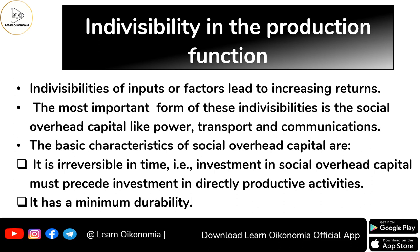The first indivisibility is indivisibility in the production function. We know that output Q is a function of different inputs — labor, capital, technology, and so on. Indivisibility of factors of production leads to increasing returns, as Rosenstein-Rodan has argued. The most important forms of these indivisibilities include power, transport, communication, and technology — which he called social overhead capital.